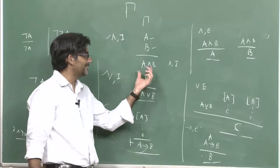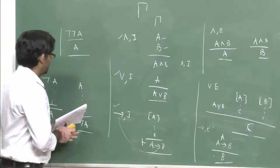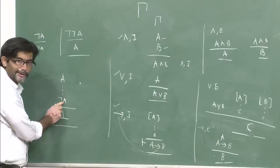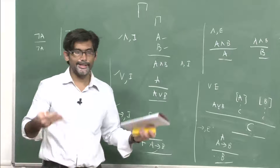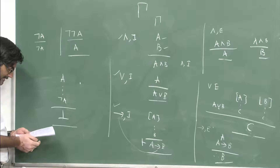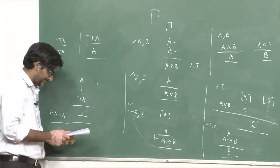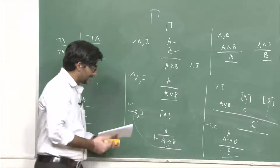There is one more important thing: whenever you derive both A and ¬A, that is a contradiction — you cannot simultaneously say 'it is raining' and 'it is not raining.' This leads to the contradiction symbol. You can remove the conjunction and write simply the contradiction. There are also other obvious rules such as modus tollens and replacement rules sitting at the background.